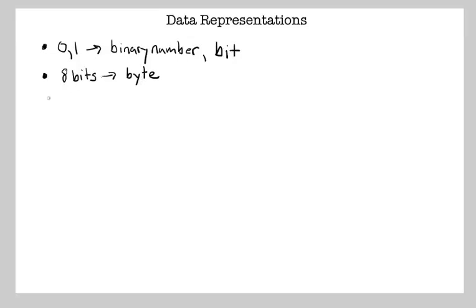So suppose we wanted to represent a number with just ones and zeros. If you can only have two digits, a zero and a one, then you can't use a base ten counting system like we do normally.